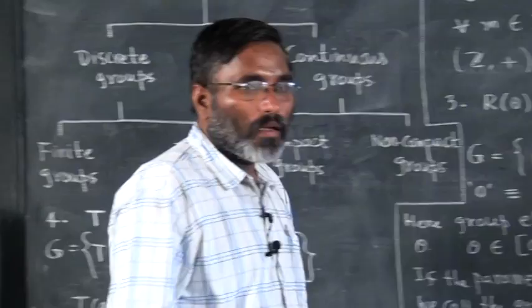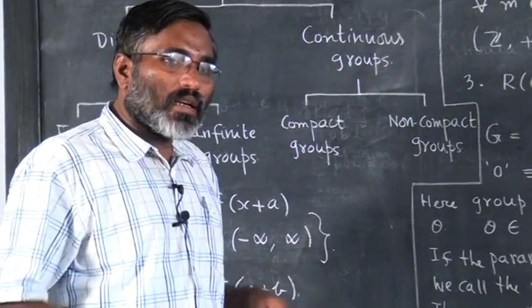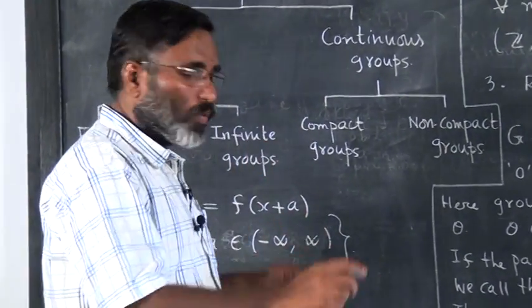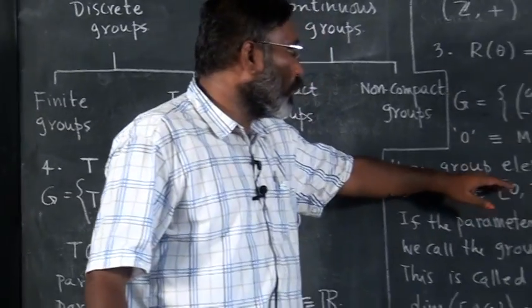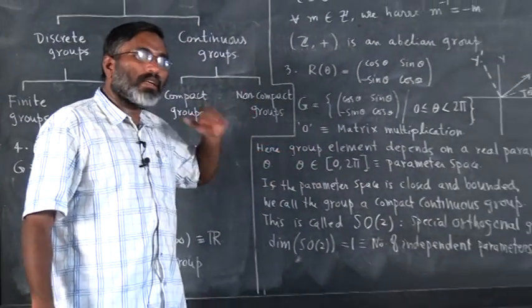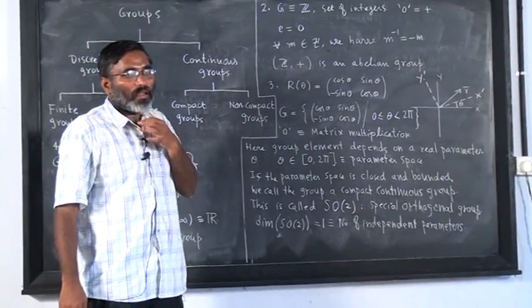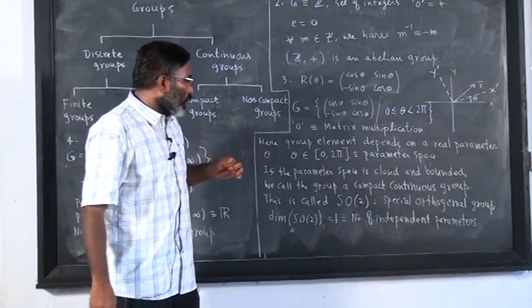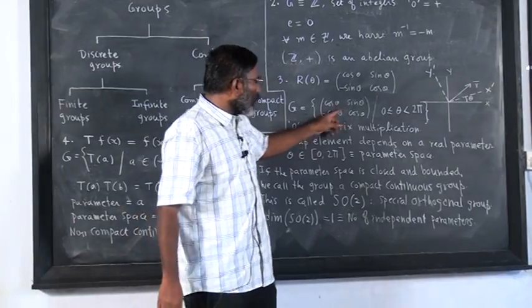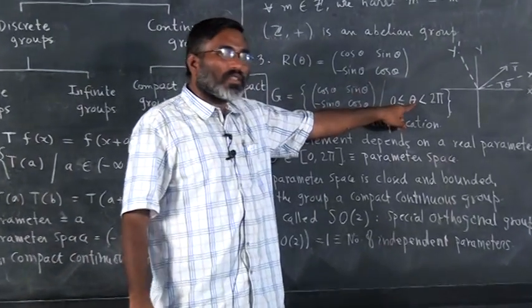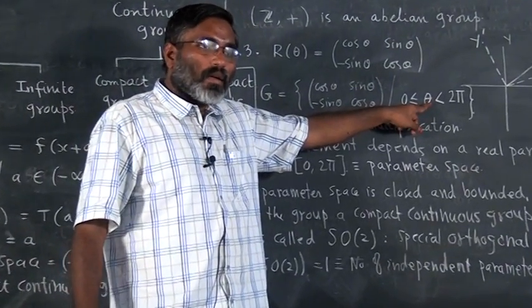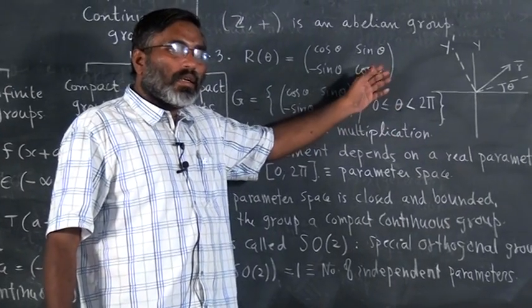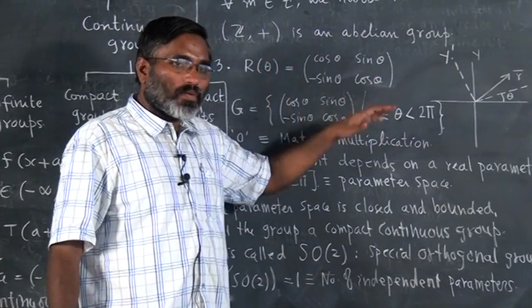Lie group is a general name. All of these are Lie groups. SO(3) is a Lie group. So a Lie group is a general structure. A Lie group is a group which depends on the continuous variation of a parameter, and you have certain properties for this Lie group.